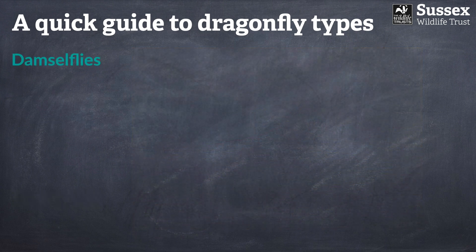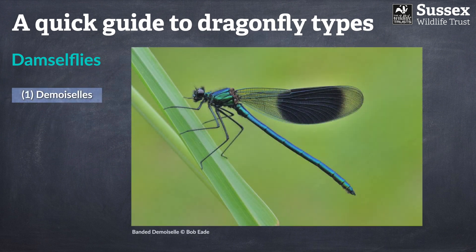That's it for the dragonflies, so now we move on to the damselflies. Fortunately, the damselflies can also be split into six groups, just like the dragonflies, which helps keep things quite simple. The first group are the demoiselles — the beautiful demoiselles. They have a startling iridescent coloration, absolutely stunning. They're also very fluttery and butterfly-like in their flight characteristics, and they have a really unique character trait: they're the only UK damselflies to have coloured wings. There are just two species of demoiselle in Britain.